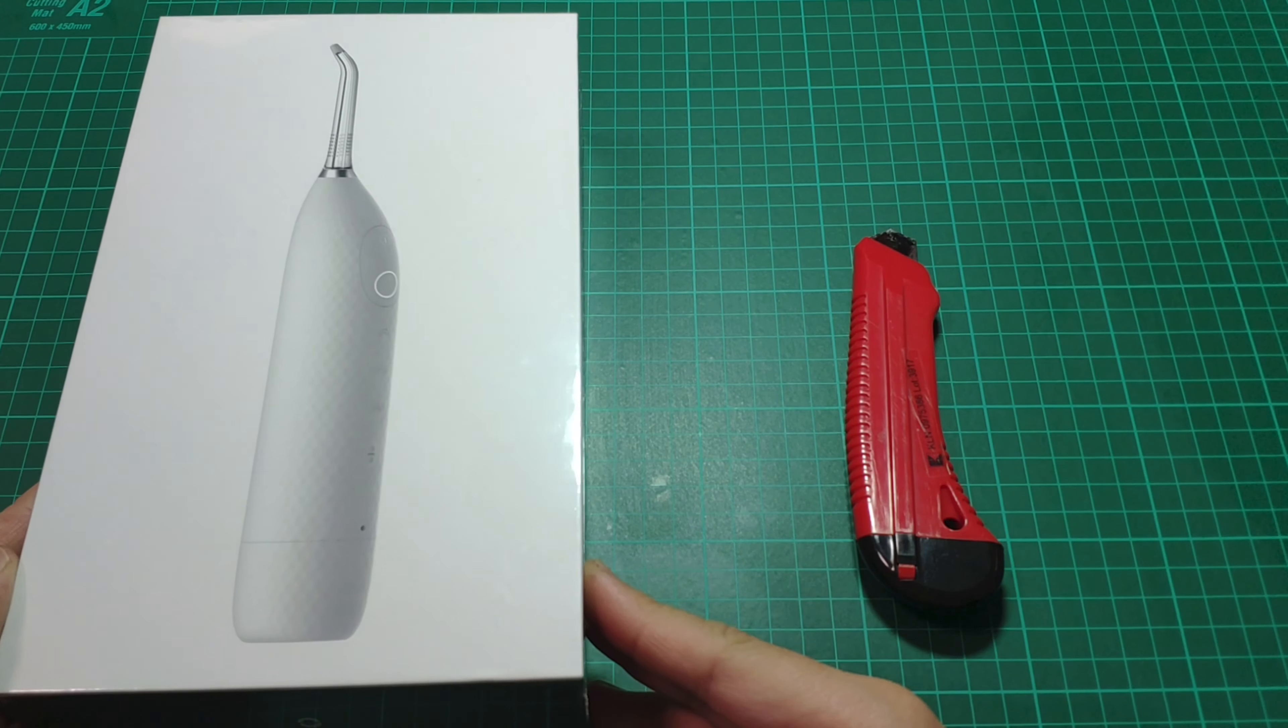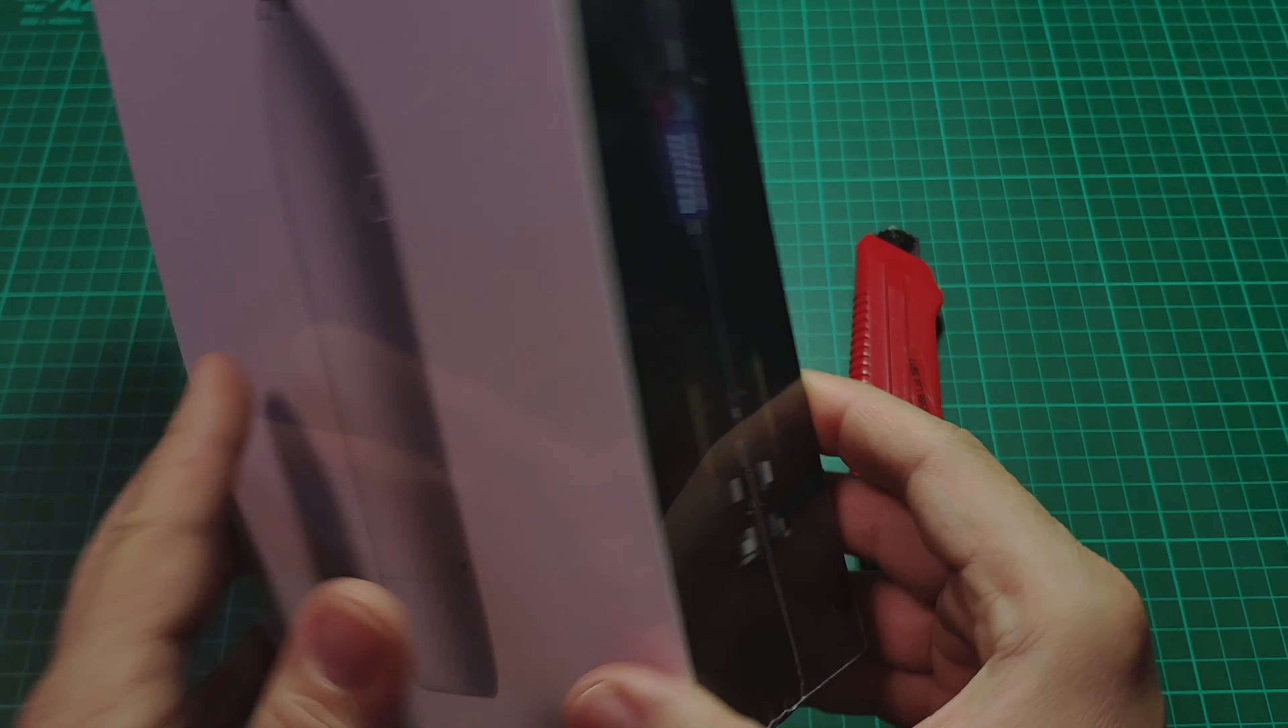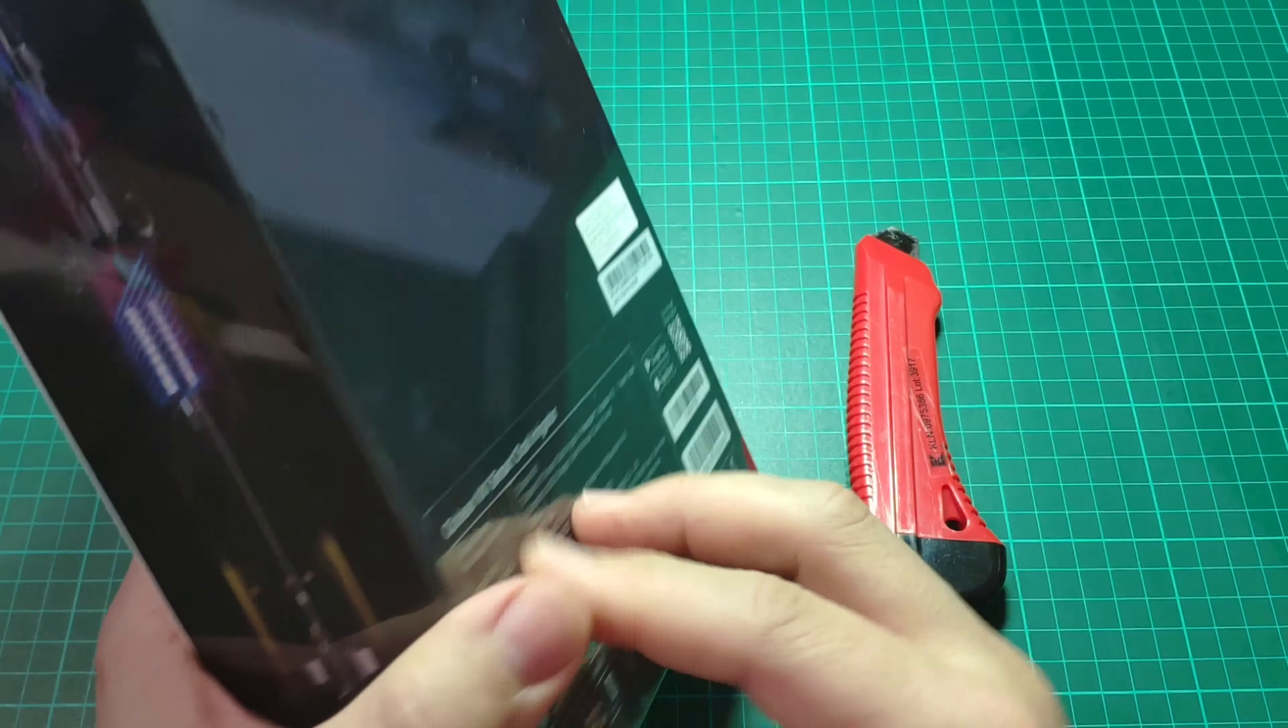Hello everyone, today we are going to take a quick look at the Oclean W1 oral irrigator. This is a smart device with Bluetooth connectivity, so you can set up a lot of things regarding how it works and monitor it. It has various indicators, so we are going to test that also.